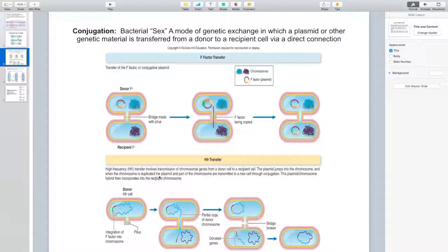the plasmid and part of the chromosomes are transmitted to a new cell through conjugation. So, the plasmid in this case is not acting alone, but it's incorporating itself into the bacterial genome, the actual bacterial genome, and then is transmitting itself through that mode. This plasmid chromosome hybrid then incorporates into the recipient chromosome, bringing a huge amount of genetic variation.